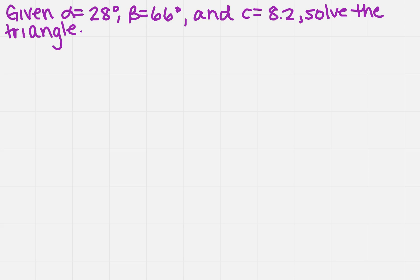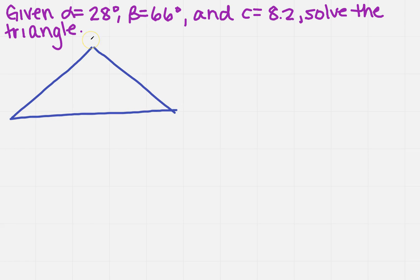To solve the triangle, the very first thing I want to do is draw a triangle. We have angles alpha, beta, and gamma. Across from the alpha angle is the A side, across from beta is the B side, and across from gamma is the C side. So I can already label the sides of my triangle.